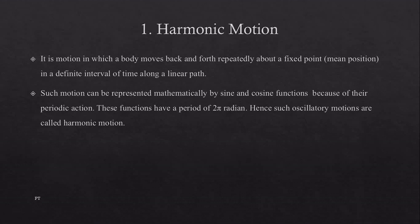Harmonic motion: it is motion in which a body moves back and forth repeatedly about a fixed point, i.e. mean position, in a definite interval of time along a linear path. Such motion can be represented mathematically by sine and cosine functions because of their periodic action. These functions have a period of 2π radian, hence such oscillatory motions are called harmonic motion.